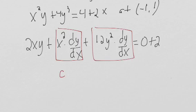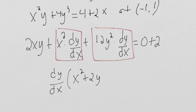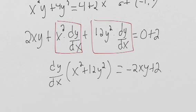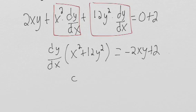So we have dy/dx times x² plus 12y². And then that's equal to -2xy plus 2.